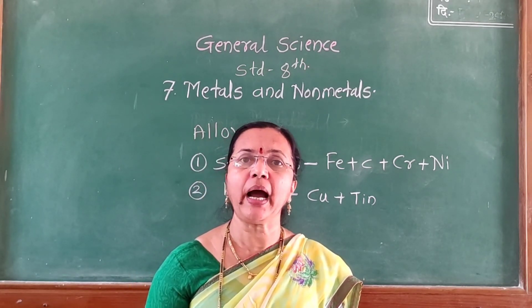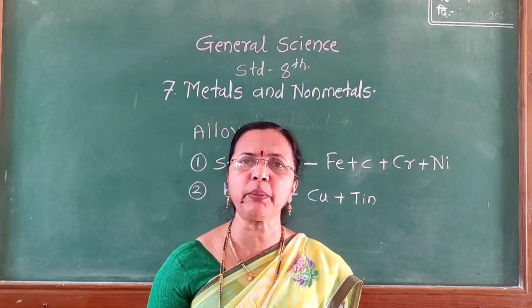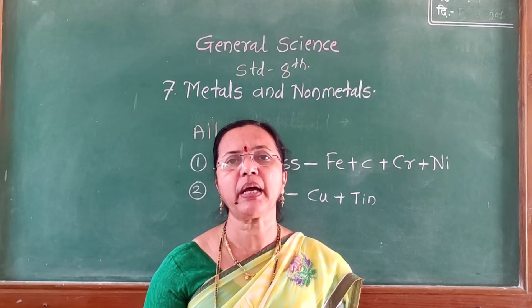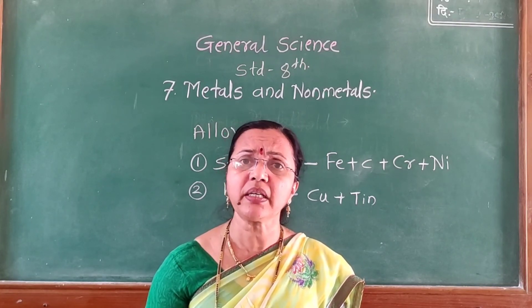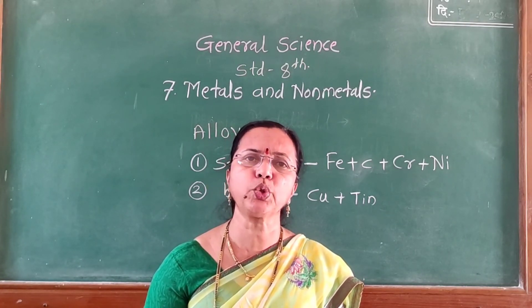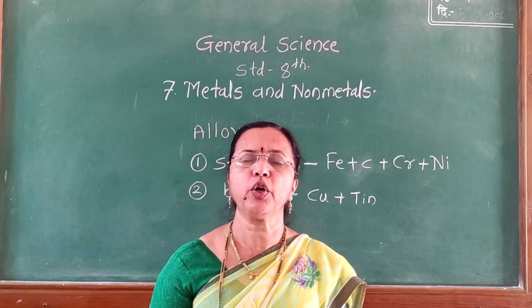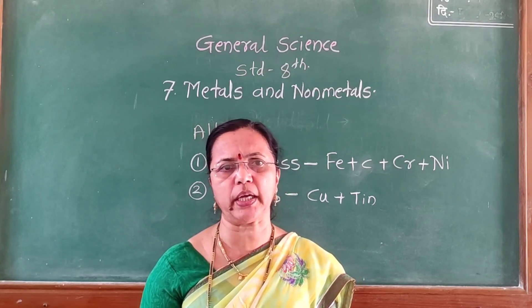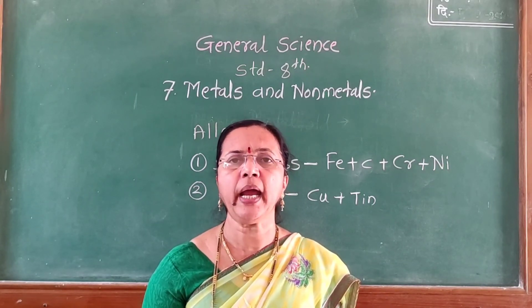Do you know there is an iron pillar in the premises of Qutub Minar in Delhi? It was made around 1500 years ago. The pillar is still lustrous even after so many years because it was made from a special alloy containing small proportions of carbon, phosphorus and silicon.